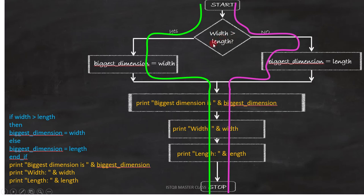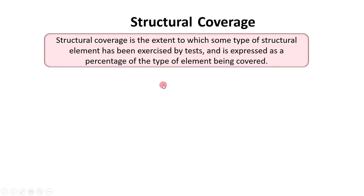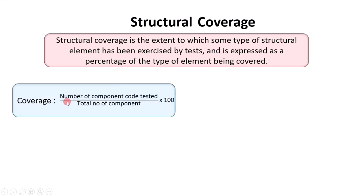In white box testing, we can calculate coverage for component testing or component integration testing. The coverage for component testing is calculated by dividing number of component code tested by total number of components, multiplied by 100.